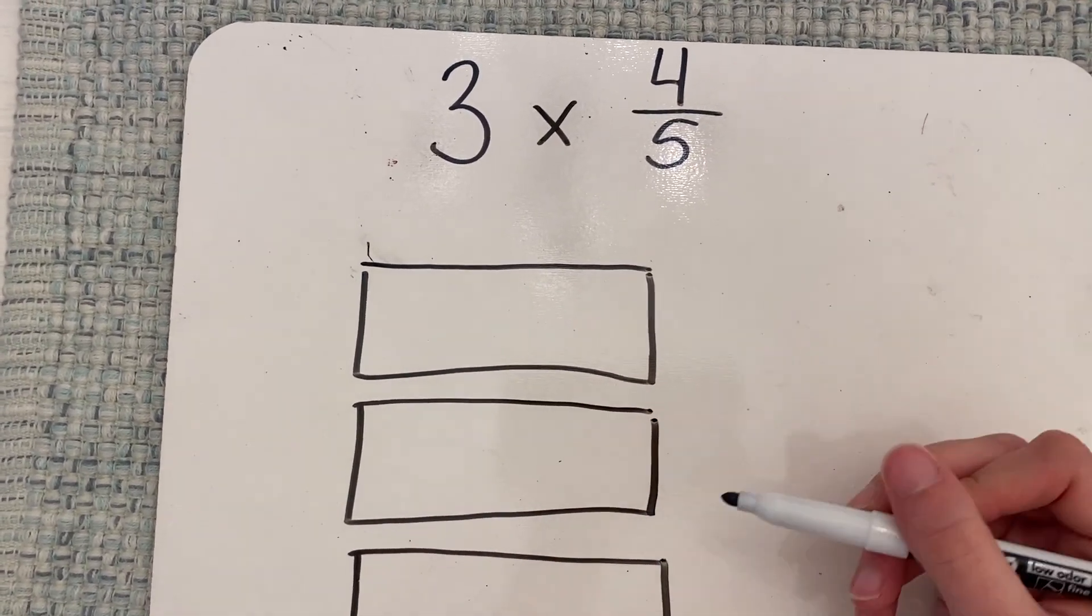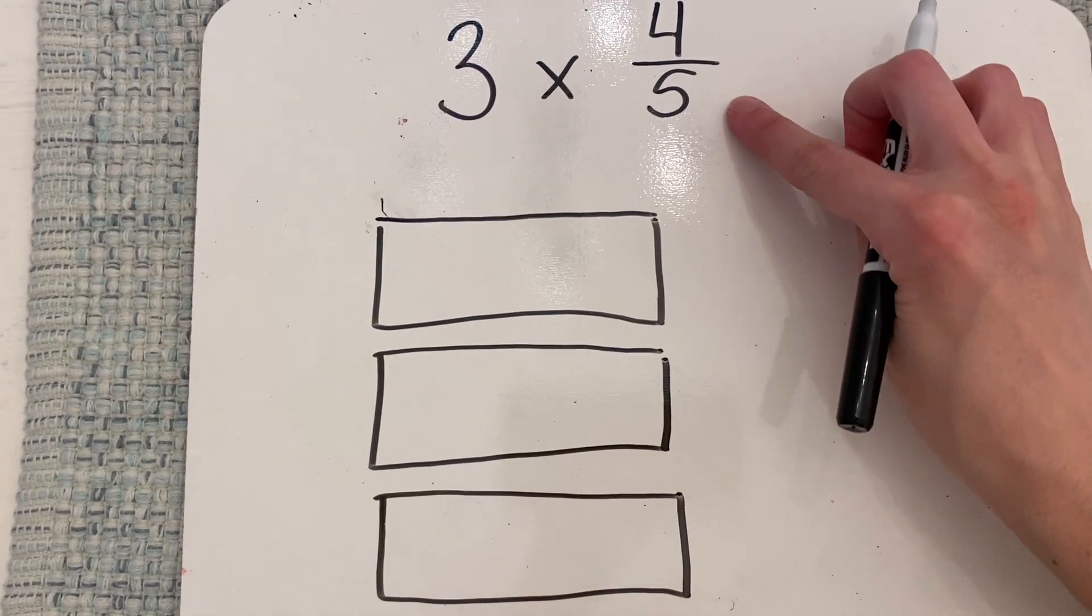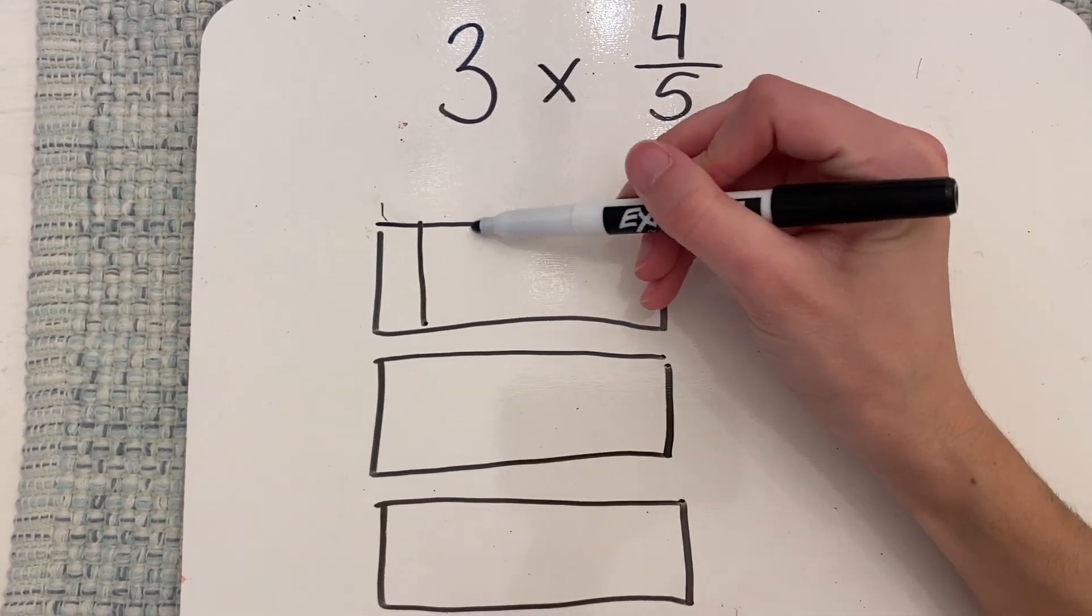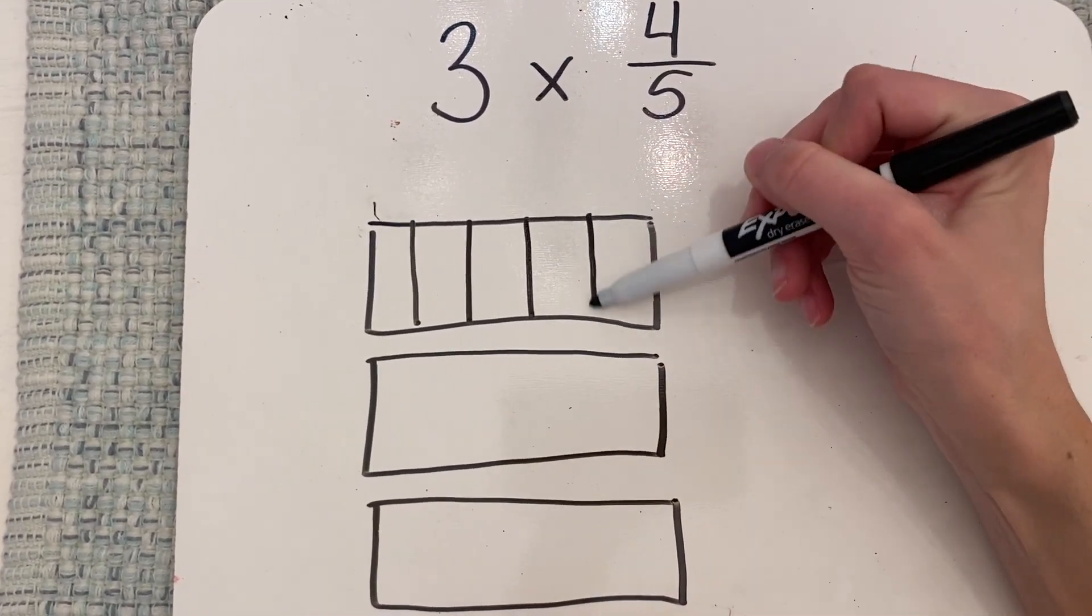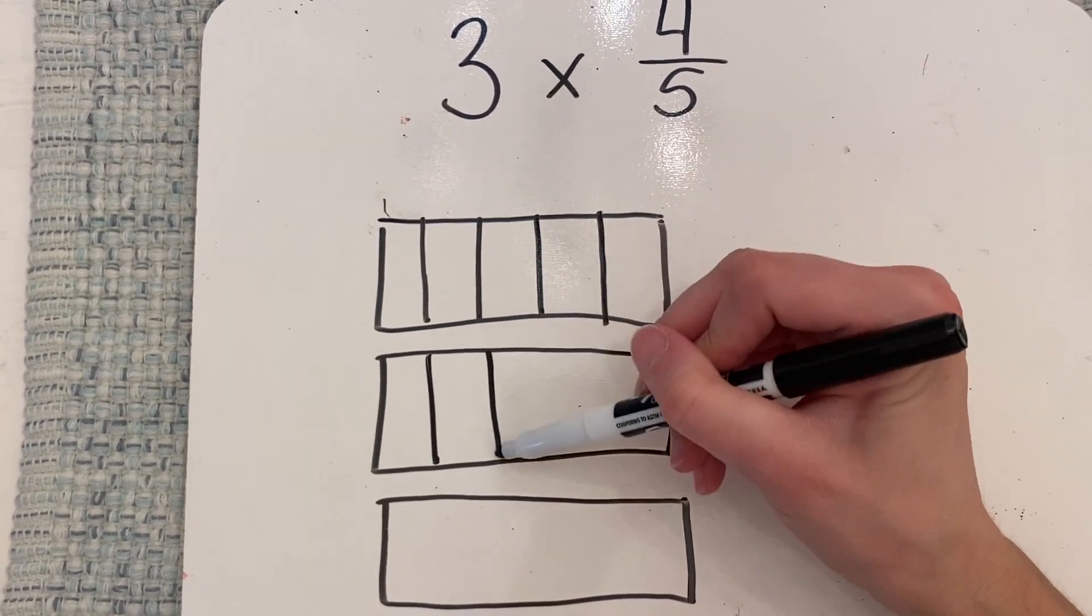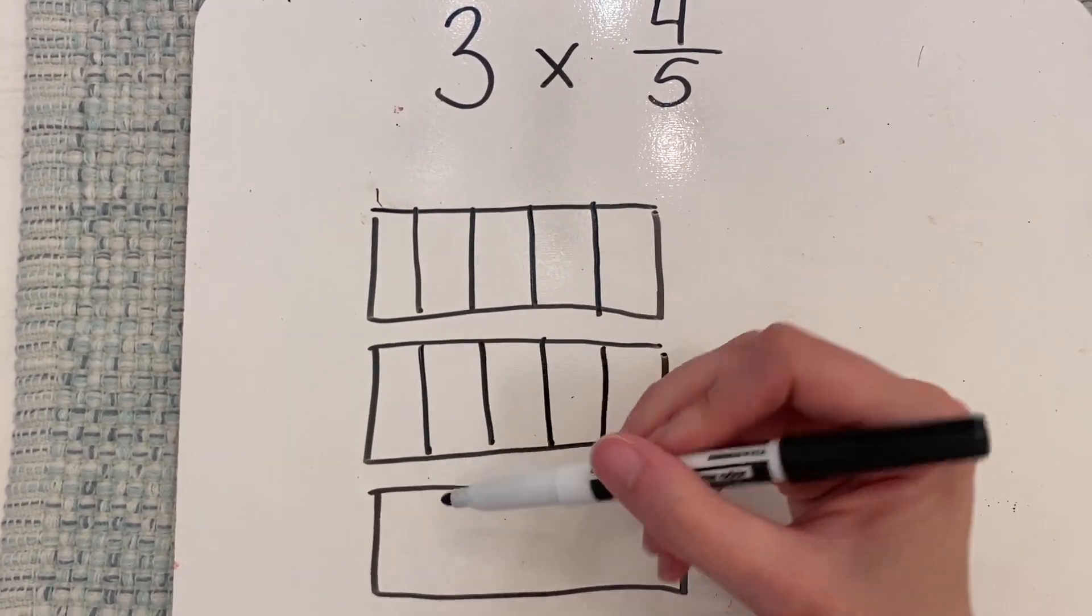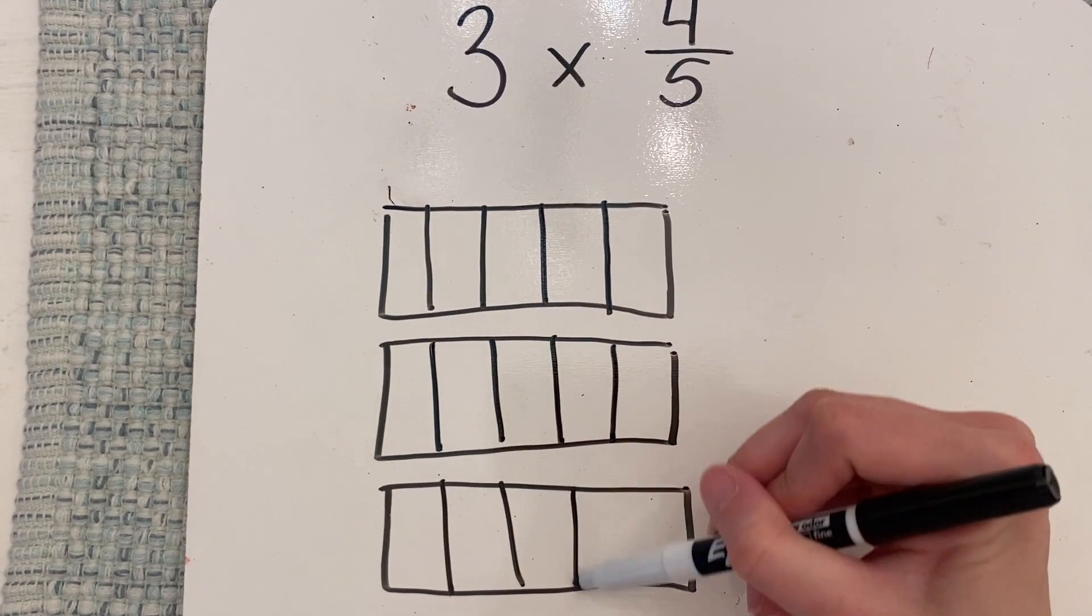We're going to split each box into fifths because that's my fraction. So one, two, three, four, five. One, two, three, four, five. One, two, three, four, five.